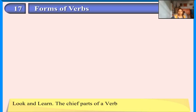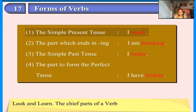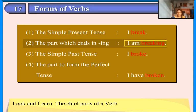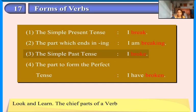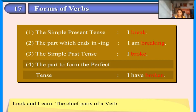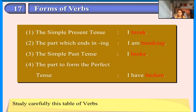Forms of verbs. Look and learn the chief parts of a verb. The simple present tense: I break. The part which ends in -ing: I am breaking. The simple past tense: I broke. The part to form the perfect tense: I have broken.